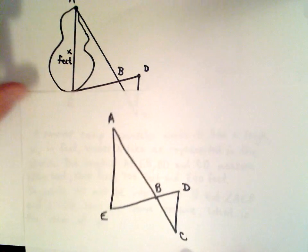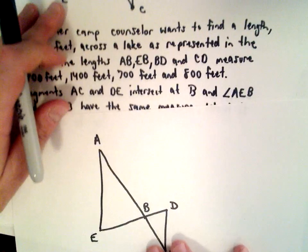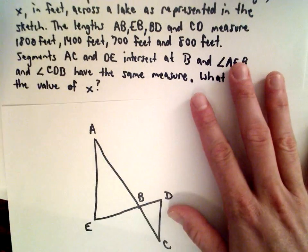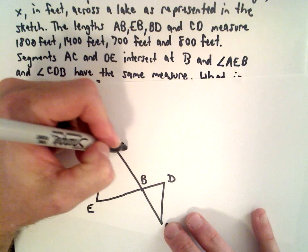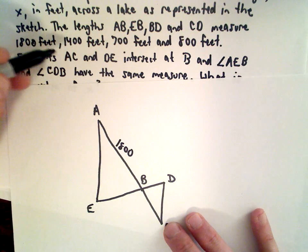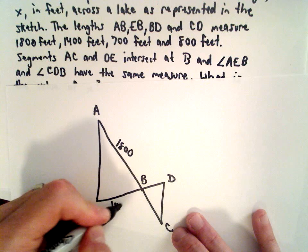I've got my diagram here. Let me go ahead and fill in the values. So we're told that AB measures 1800 feet, we're told that EB measures 1400 feet...